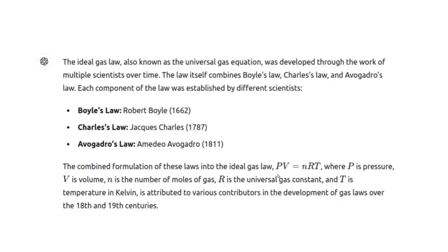This goes back to the ideal gas law. As you descend through Venus's troposphere, the pressure increases and thus the temperature increases as well. Because of the very high pressure we can predict that the temperature on the surface of Venus is also extremely hot — and it is. There is nothing in this equation which relates to greenhouse gases; it's the same for all different types of chemical compositions.